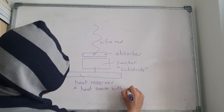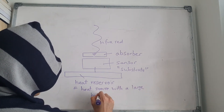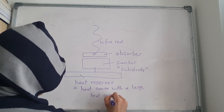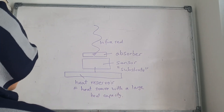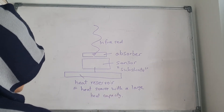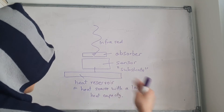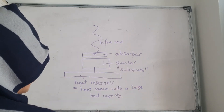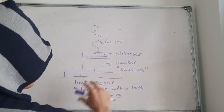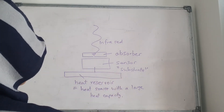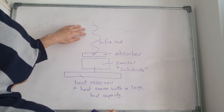The heat reservoir provides a large heat capacity, so the temperature stays largely constant — because if something has a large heat capacity, you would need a lot of energy to raise its temperature. So the temperature will remain largely constant.